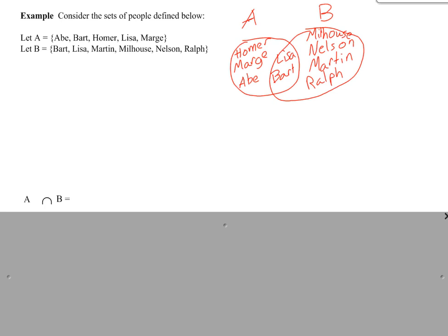So A intersection B, that's the probability that event A and B both occur. So in this situation, we have to find the names that are in A and B. So we would have Lisa and Bart.